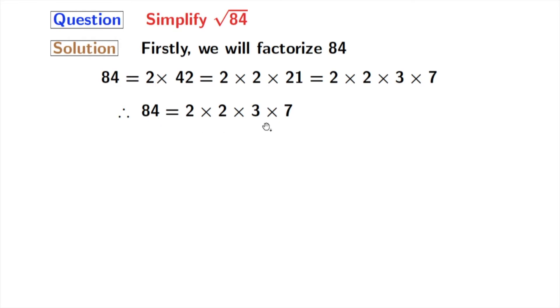Taking square root on both sides, we get square root of 84 is equal to square root of 2 times 2 times 3 times 7. After grouping, we get square root of 2 times 2 times square root of 3 times 7.